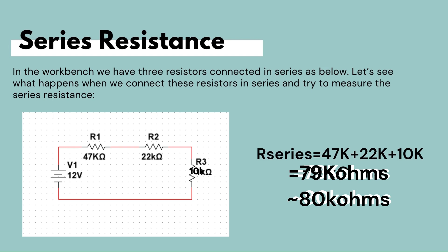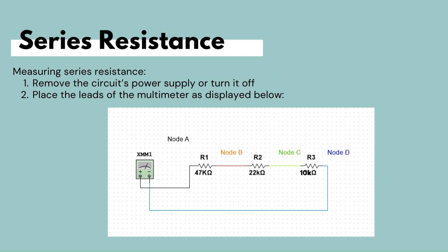On the workbench we have three resistors connected in series as shown in the circuit diagram. From what we've learned, we can calculate the series resistance in advance by adding them up: 47kΩ in series with 22kΩ and 10kΩ gives us approximately 79kΩ total. We expect to see about 79kΩ on the multimeter display. It's important to note that when measuring resistance, the power supply plug should be removed from the circuit board.